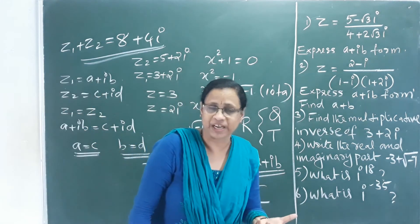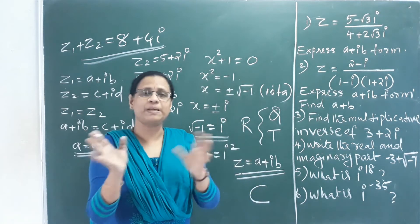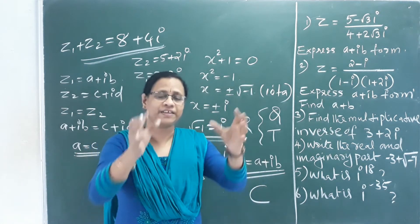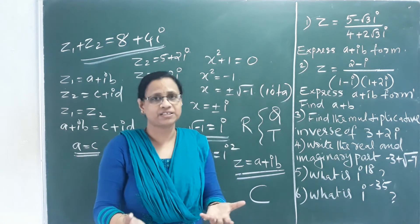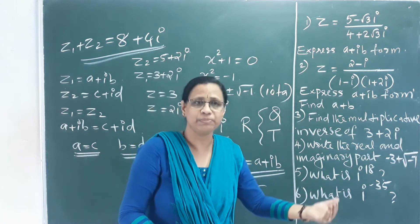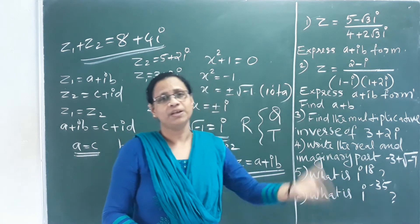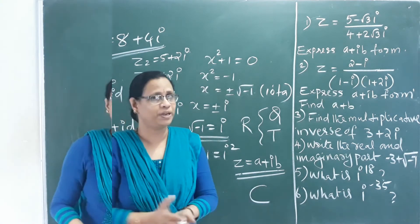Subtraction of complex numbers is simple: subtract real parts from real parts and imaginary parts from imaginary parts. Subtraction also has its properties.